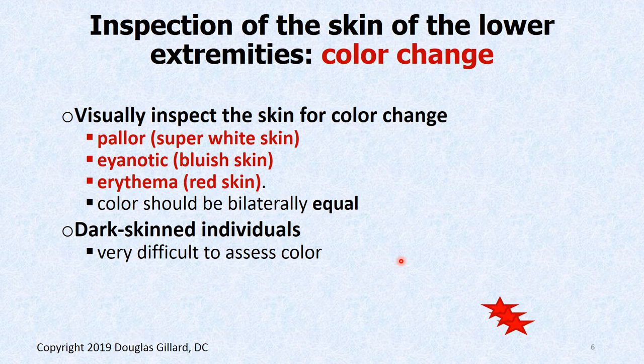As with any exam, you start out inspecting. We're going to inspect the skin of the lower extremities. First thing you want to look at is down by the ankles — that's called the gaiter area. You want to inspect for some color changes. Take their socks off, take their pants off, put them in a gown. Their legs and feet should be the same color. They shouldn't be purplish unless it's freezing cold in your office. They shouldn't be pallor — that is a white color. And one shouldn't be really red.